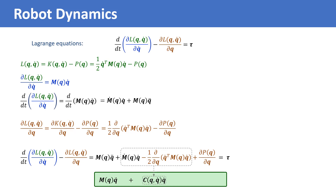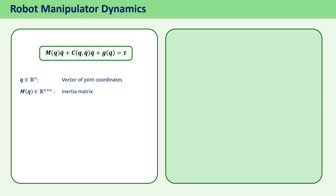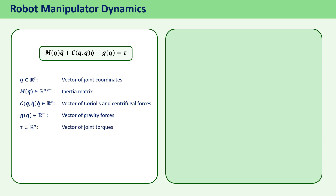We will see this in an example later in the video. The last term is the partial of the potential function with respect to q, which is an n-by-one vector known as the vector of gravitational forces, denoted by g of q. The dynamical model is written as m of q times q-double-dot plus c of q and q-dot times q-dot plus g of q equals tau, where m of q is the inertia matrix, c of q and q-dot times q-dot is the vector of Coriolis and centrifugal forces, g of q is the vector of gravity forces, and tau is the vector of joint torques.